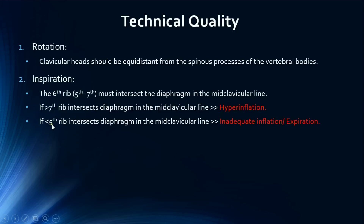If lower than the fifth rib is intersecting the diaphragm in the mid-clavicular line, this indicates inadequate inflation, or it could indicate that the chest radiograph was taken during expiration.